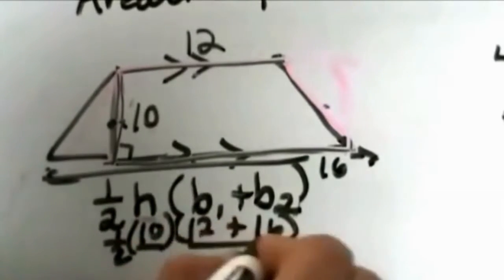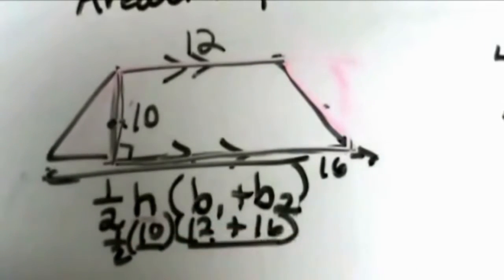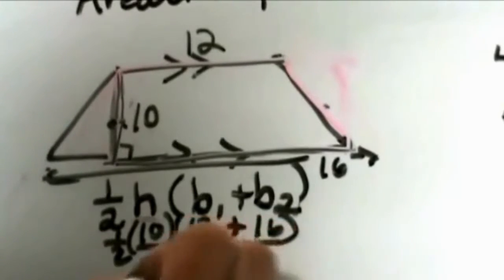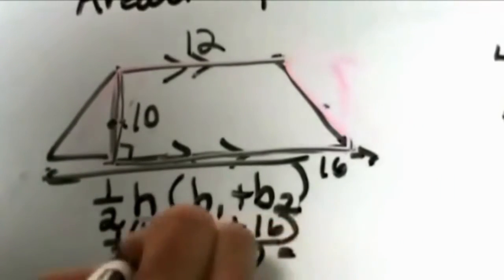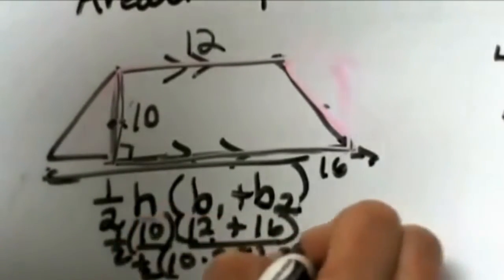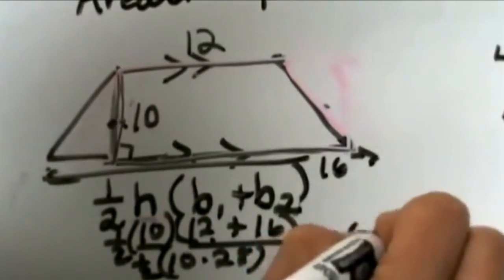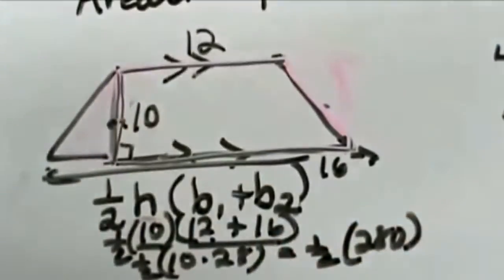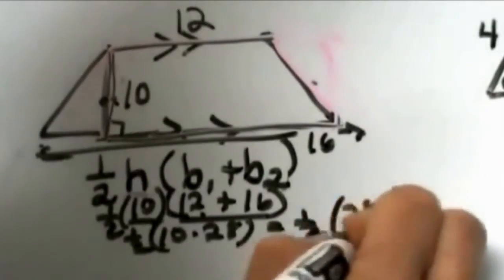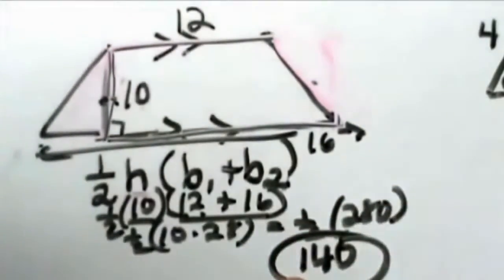So 10 times what? 12 plus 16, that's 28. So 10 times 28 is 280. Then we have to take half of 280, so we get 140 as our area. And that's the area of the trapezoid.